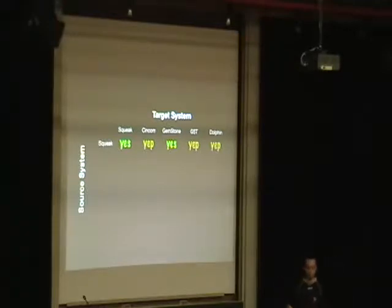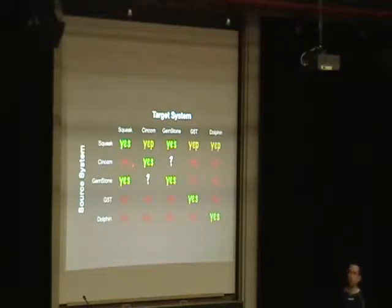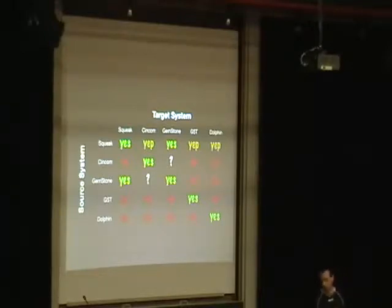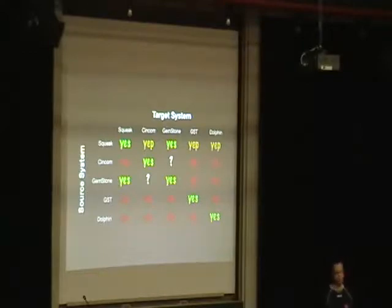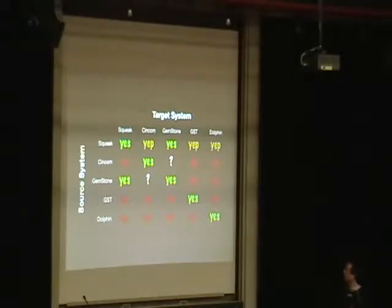GNU Smalltalk and Dolphin are doing something similar. But the reverse direction is much more difficult: if you have Seaside code in Cincom Smalltalk and want to move it back to Squeak, or if you found and fixed a bug in Cincom Seaside and want to merge it back into the main branch, that's really where trouble starts. There are exporters in VisualWorks, GNU Smalltalk, and Dolphin, but for us it's very difficult because we don't know exactly what modifications were made, from which Seaside version the code was taken. Only GemStone works easily because they have full versioning information and we can just merge back the code.